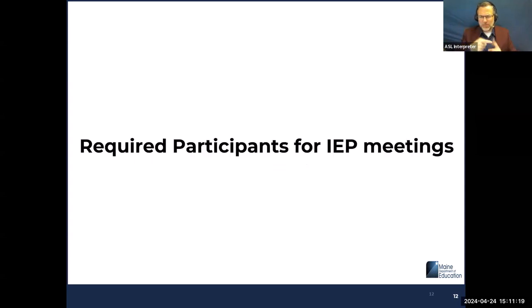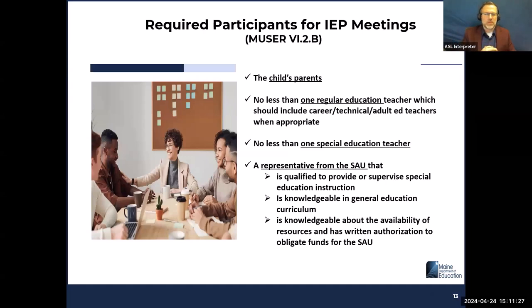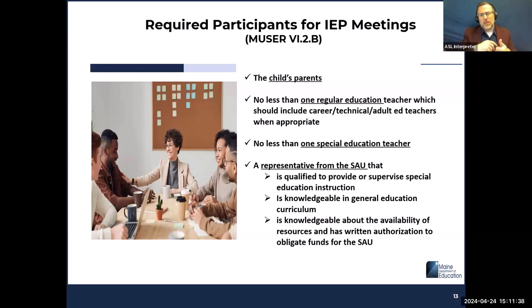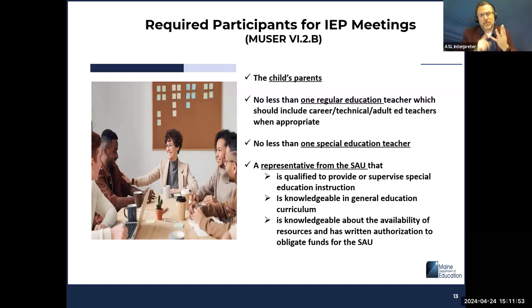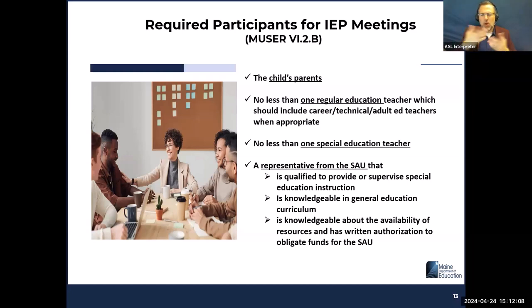Now we're going to jump into the required participants for the IEP meeting. There are eight required participants. Number one: the parents. Number two: no less than one regular education teacher, including career, technical, and adult ed teachers when appropriate. Number three: no less than one special ed teacher. Number four: a representative from the SAU who is qualified to provide or supervise special education instruction, is knowledgeable in gen ed curriculum, is knowledgeable about the availability of resources, and has written authorization to obligate funds for the SAU.